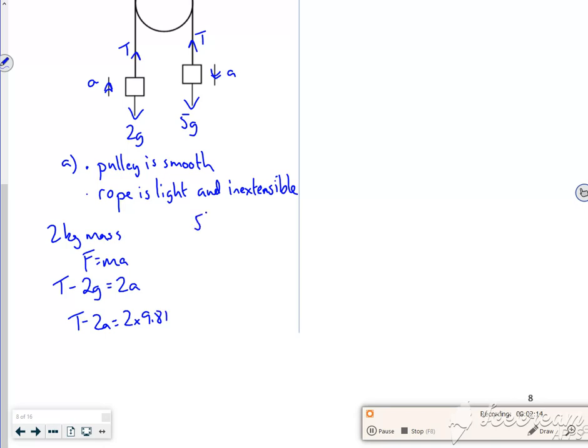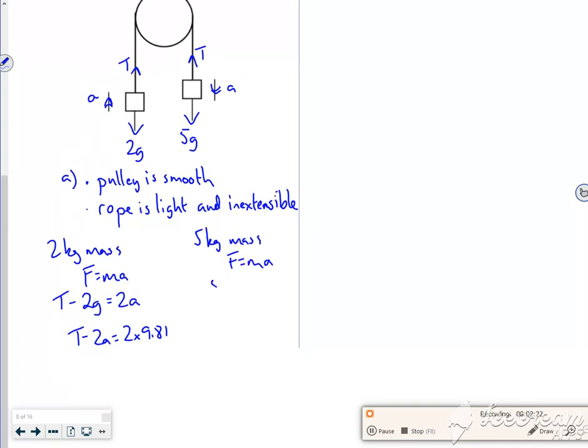So now let's look at the 5kg mass. And let's do F equals ma in the direction I travel. So this one's travelling down, isn't it? So it's 5g minus t is equal to 5a.